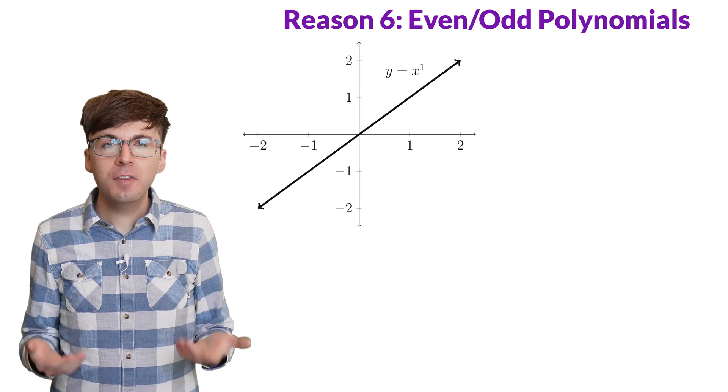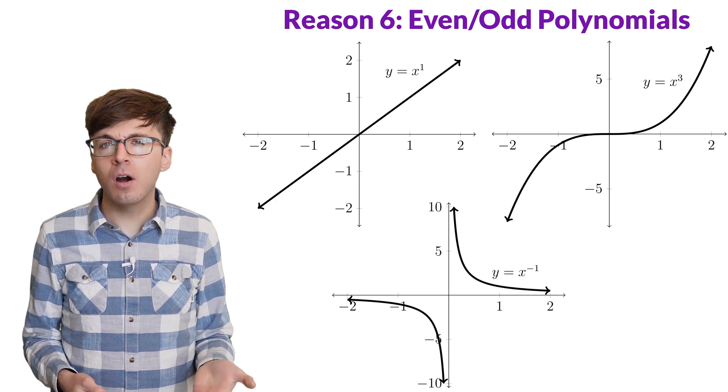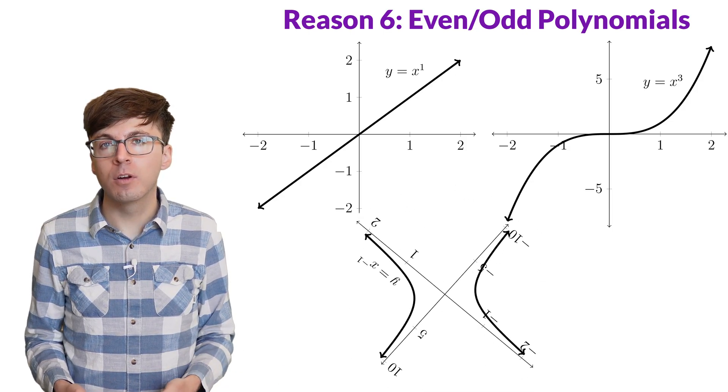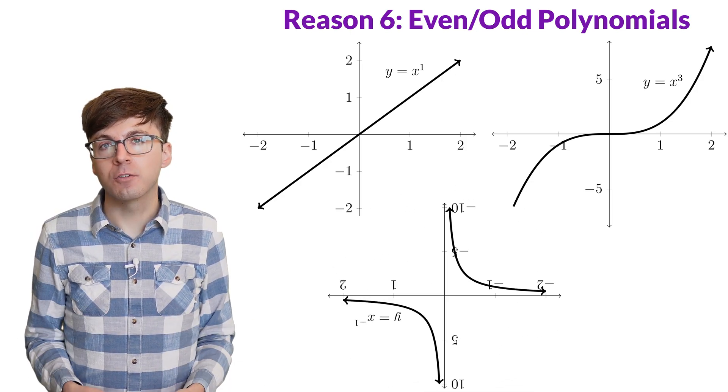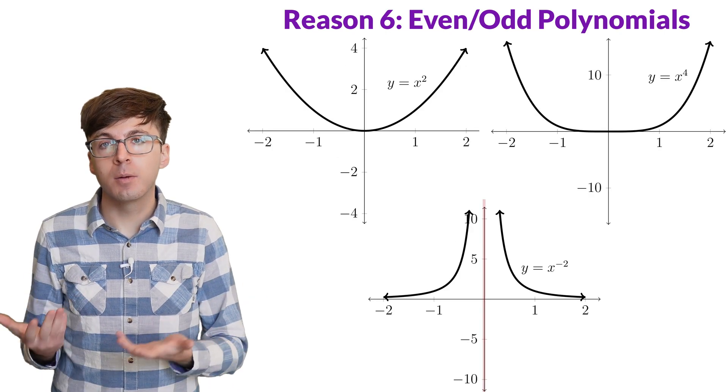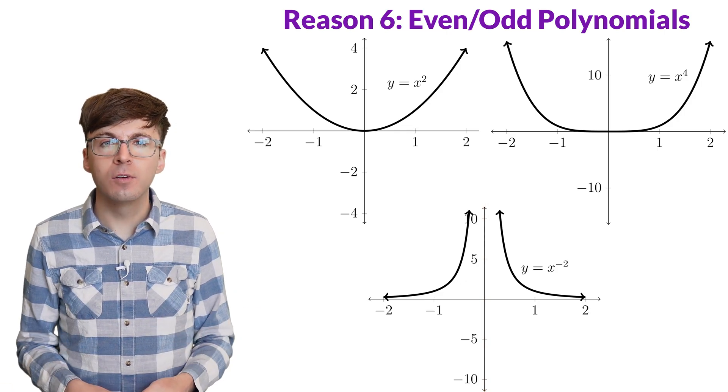Reason 6. Let's look at the graph of y equals x to the n for different integers n. When n is odd, we notice that the graphs have a rotational symmetry about the origin. We call these odd functions. When n is even, the graphs are instead symmetric about the y-axis. We call these even functions.